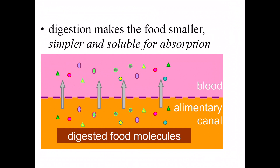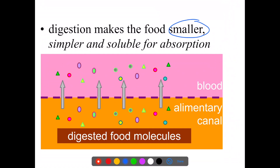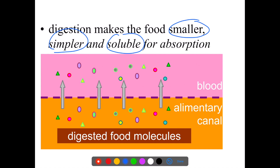We have also mentioned that digestion of food is required because humans have to make the ingested food smaller, simpler, and soluble for absorption through the small intestine into the blood. And digestion is classified into two types, namely physical digestion and chemical digestion.